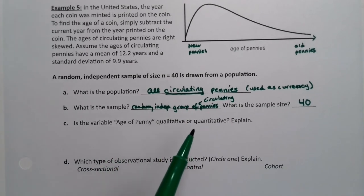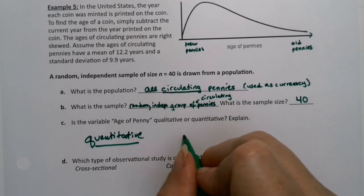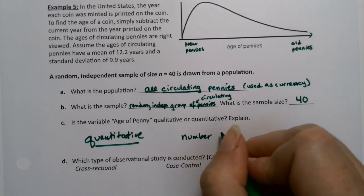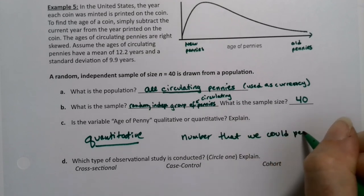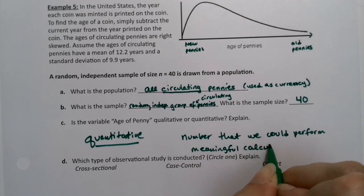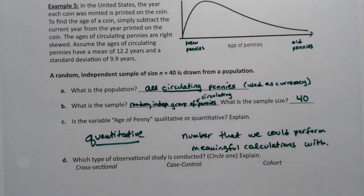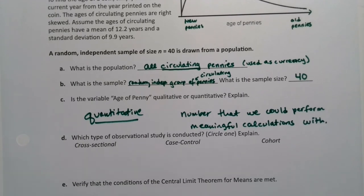Is the variable age of penny quantitative or qualitative? Well, that would be quantitative. If you can do subtraction to make it happen, then definitely it's quantitative. It's a number that provides meaningful or that we can perform meaningful calculations. If I know the age of a penny is 30 years, then I can figure out the year it was minted. That's a meaningful calculation. So age of penny has to be quantitative. It's not just a number that I use to label things like the serial number on the penny.